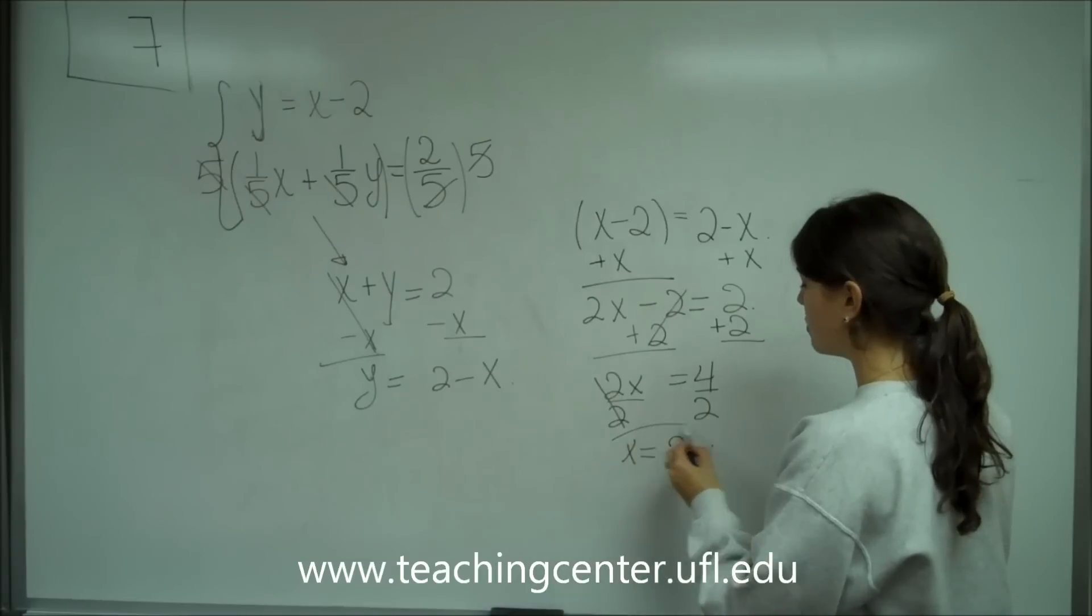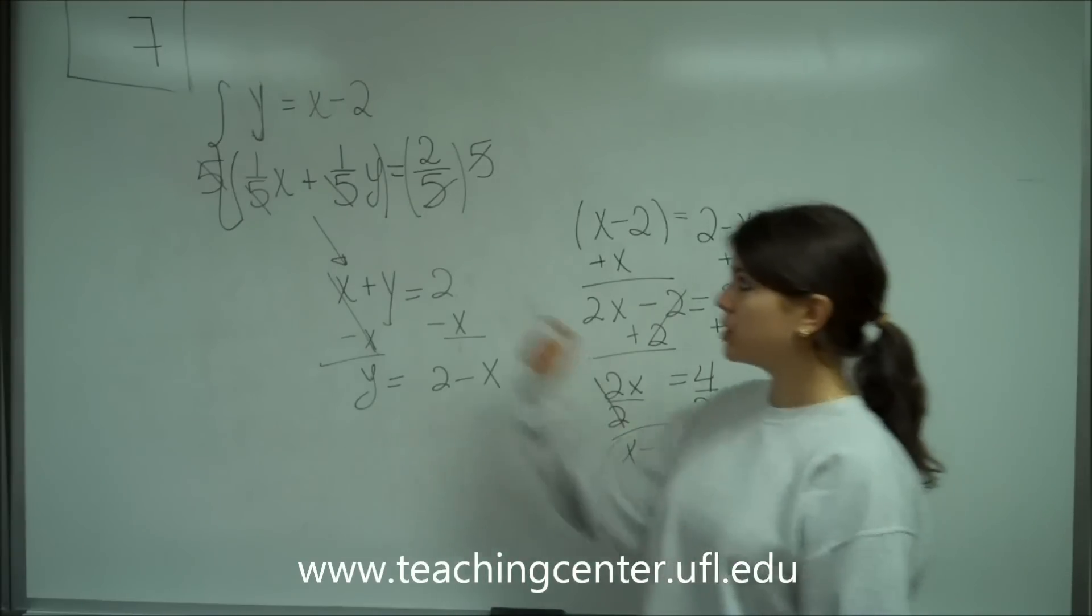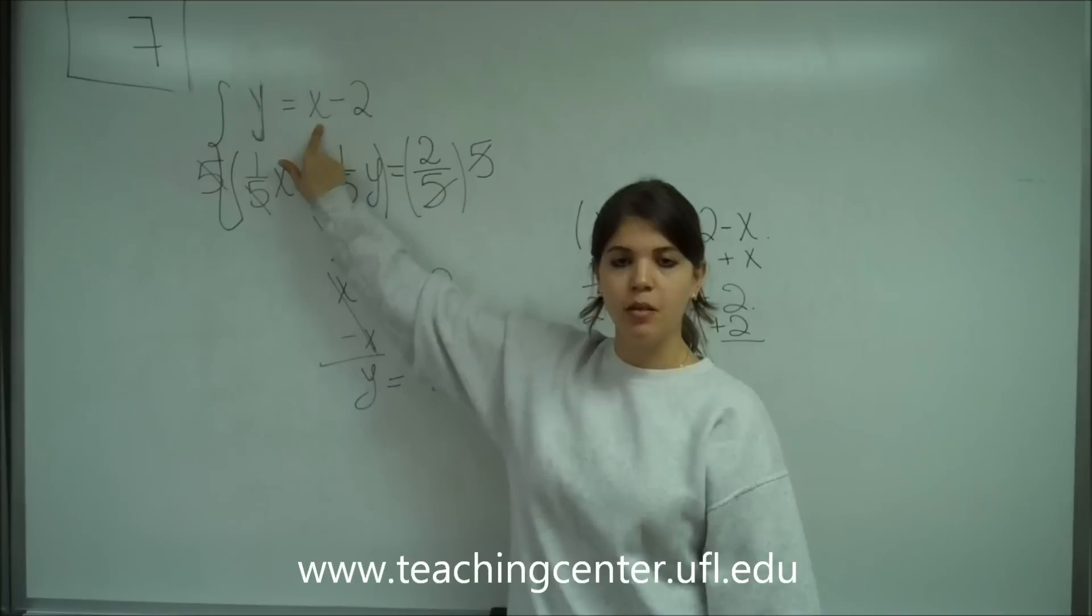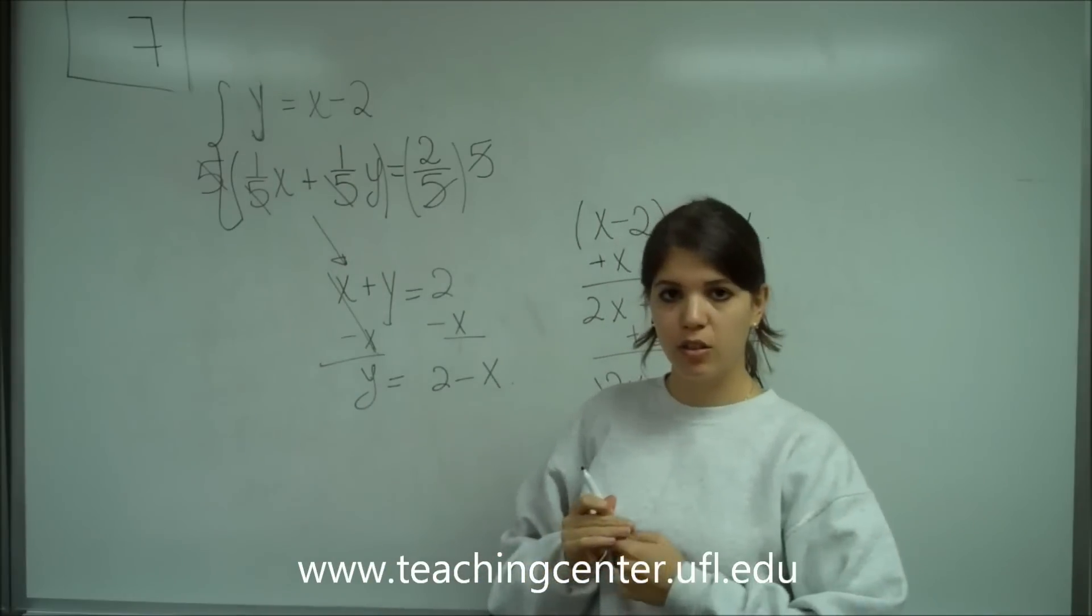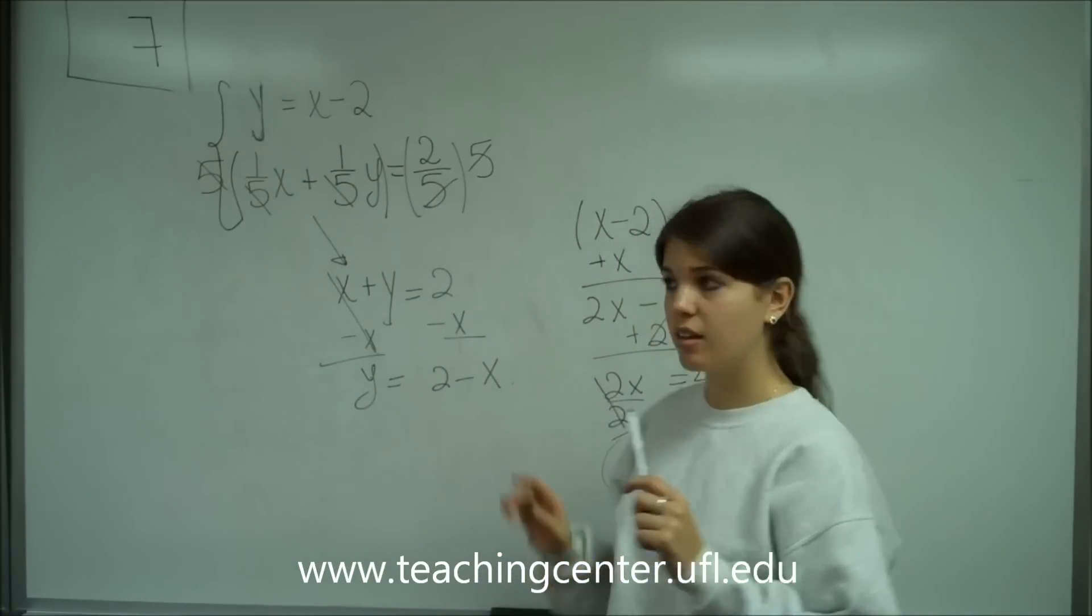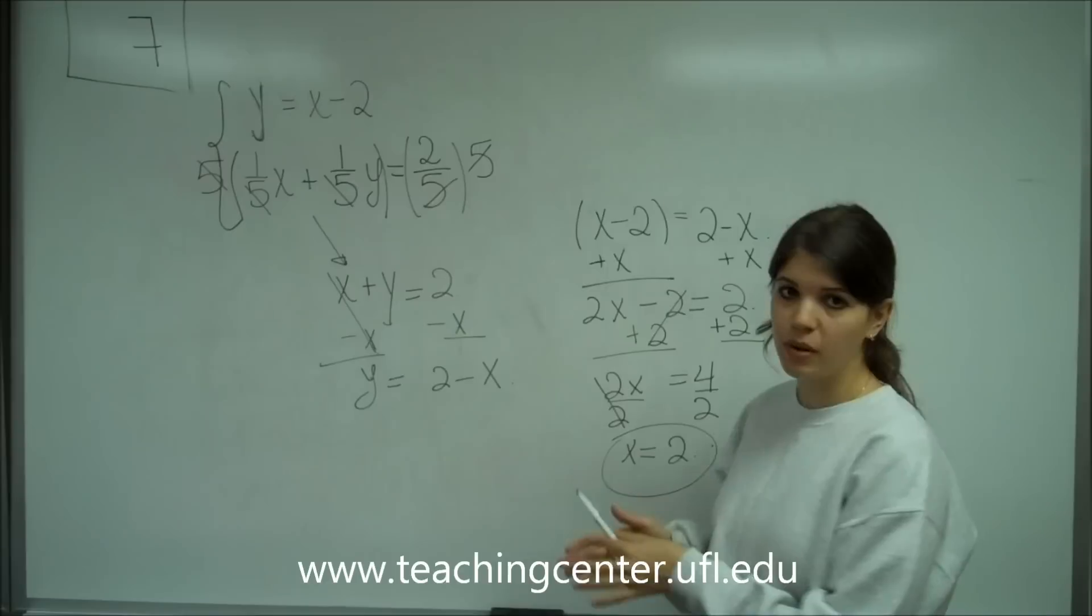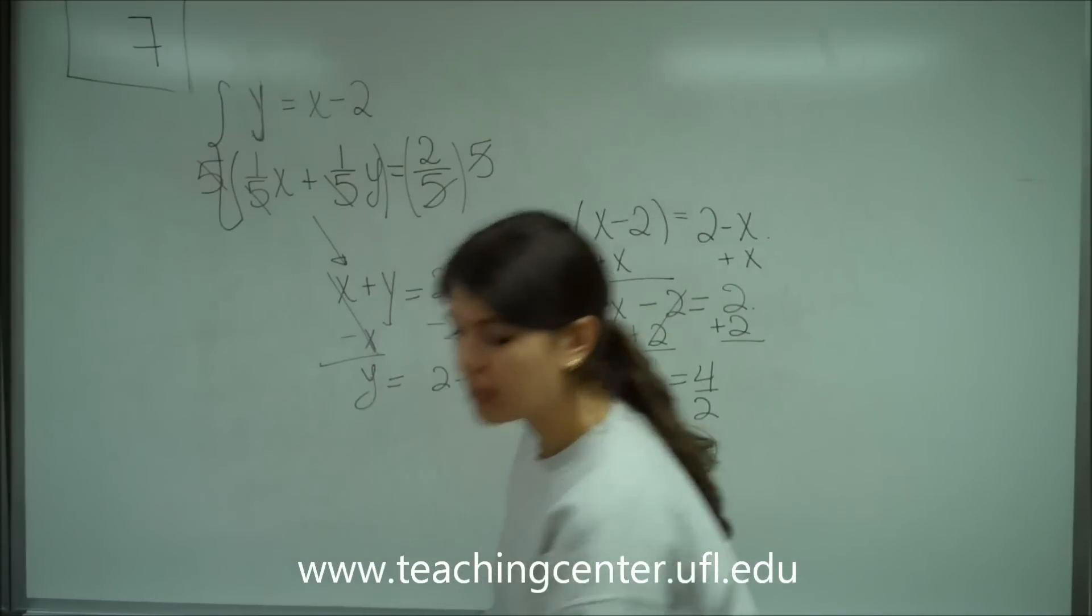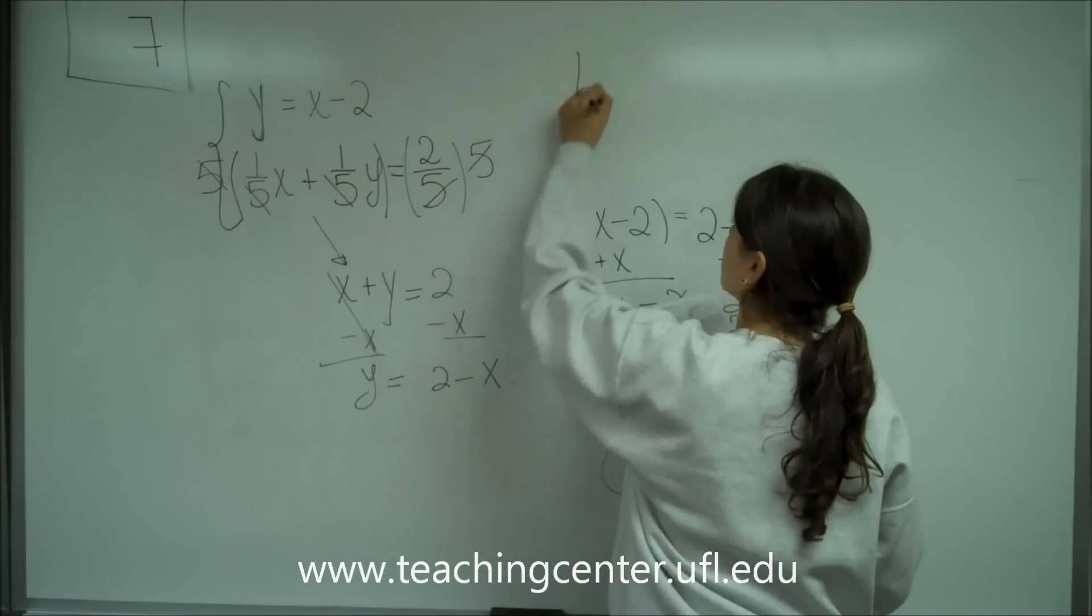So the point is, x was equal to 2. If you were to plug it into here, you would get y. But you don't need to. Because all you need to know for the answer is that this system of linear equations has one solution. And that's going to be answer b on the multiple choice.